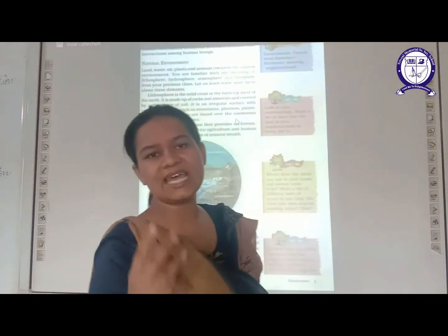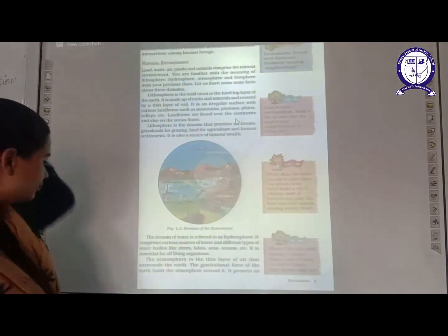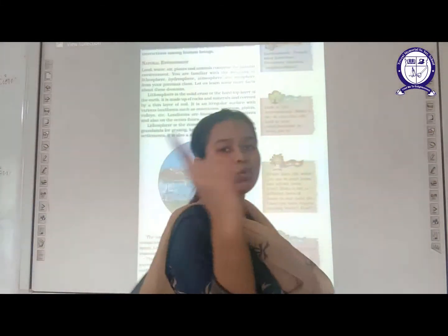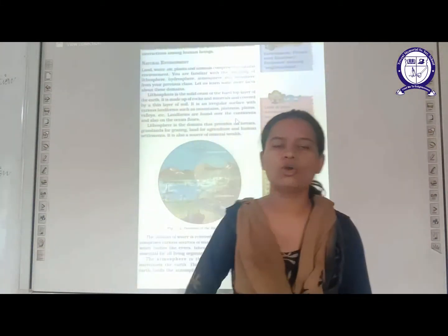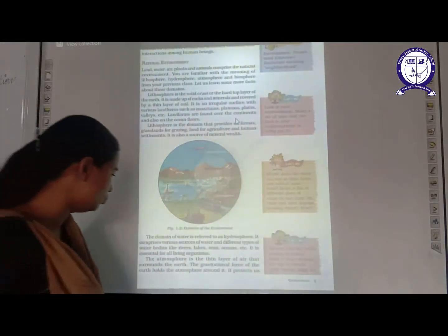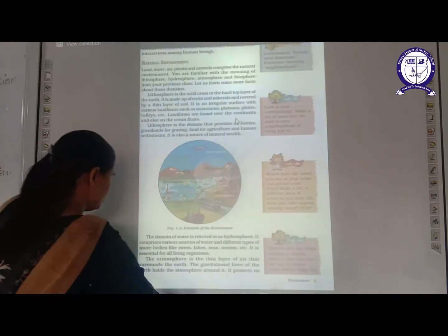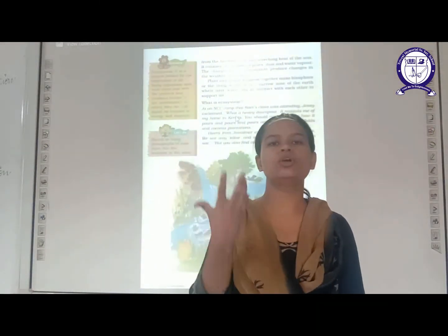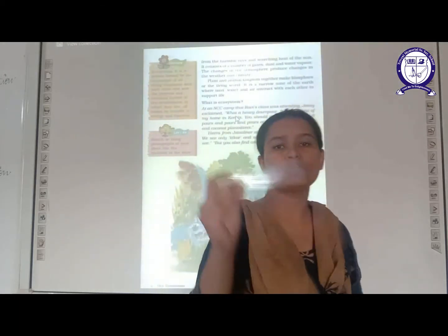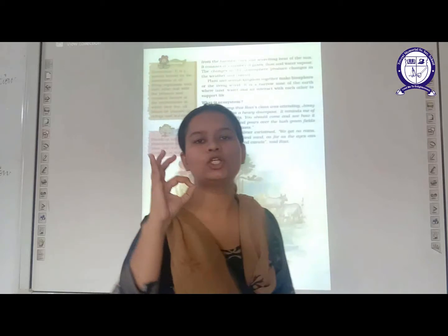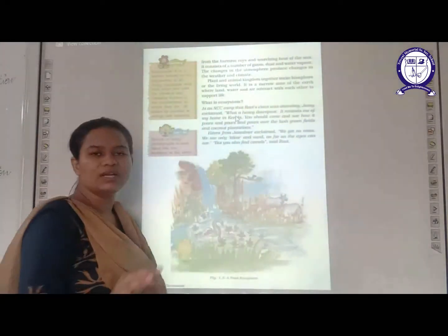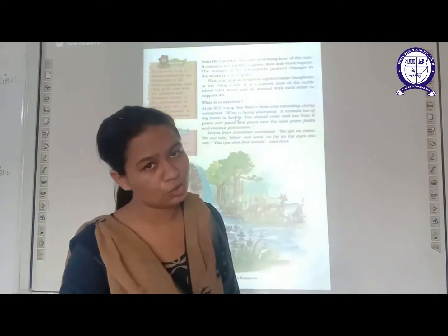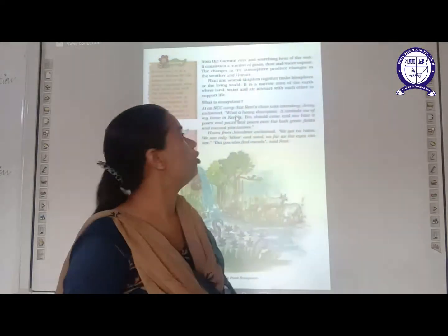The third major domain of the Earth is atmosphere. The atmosphere is the thin layer of air that surrounds the Earth — one thin layer around the Earth called atmosphere. What is the use of this atmosphere? It protects us from the harmful rays of the sun. You must have heard about the concept of the ozone layer — that is present in the domain of the Earth named atmosphere.